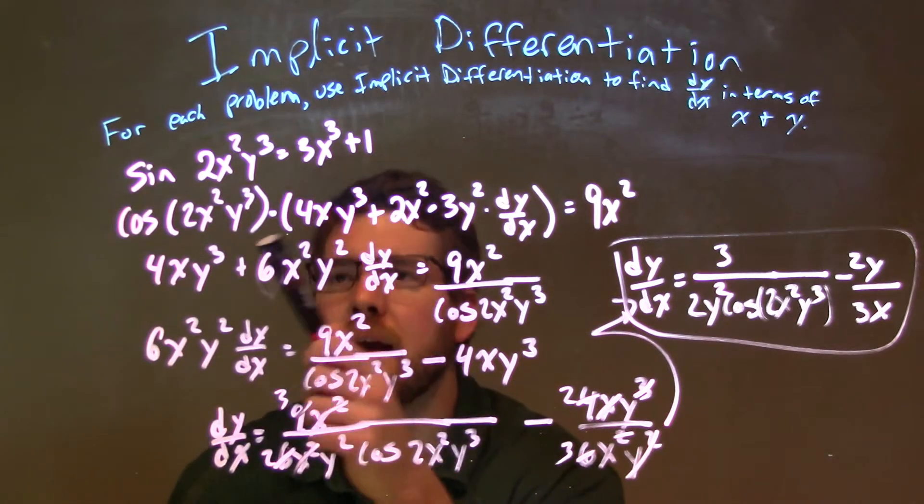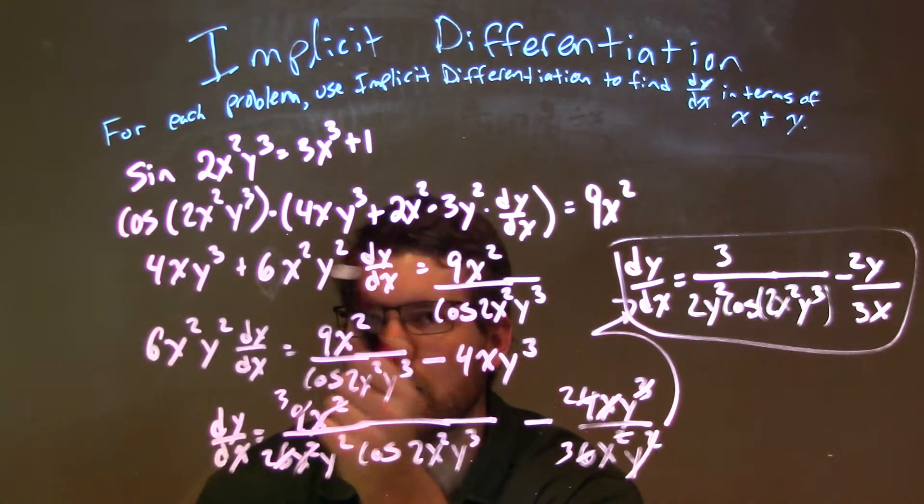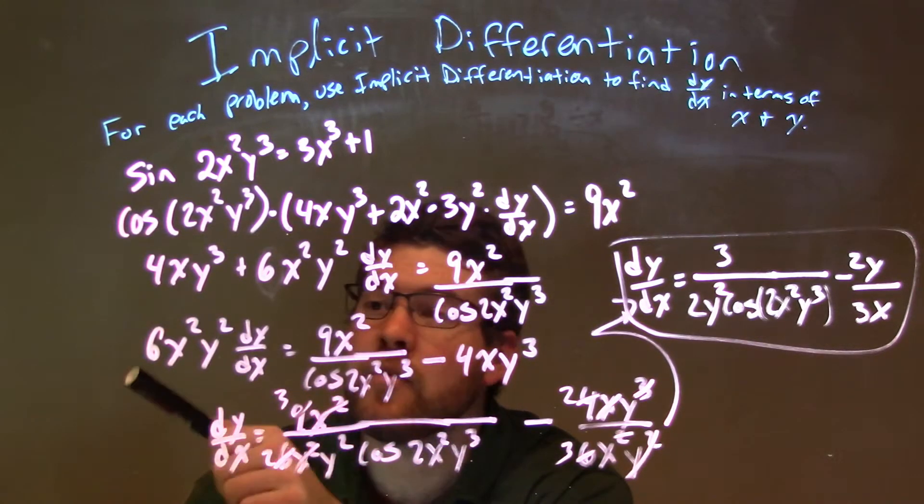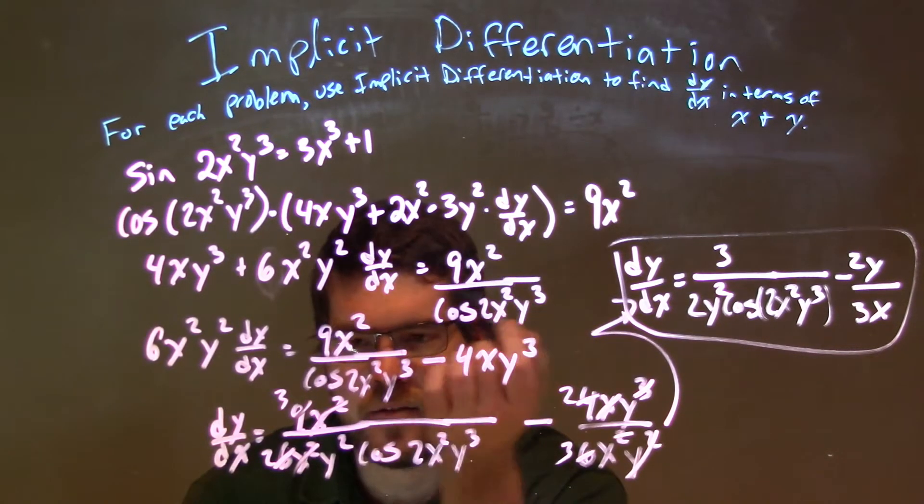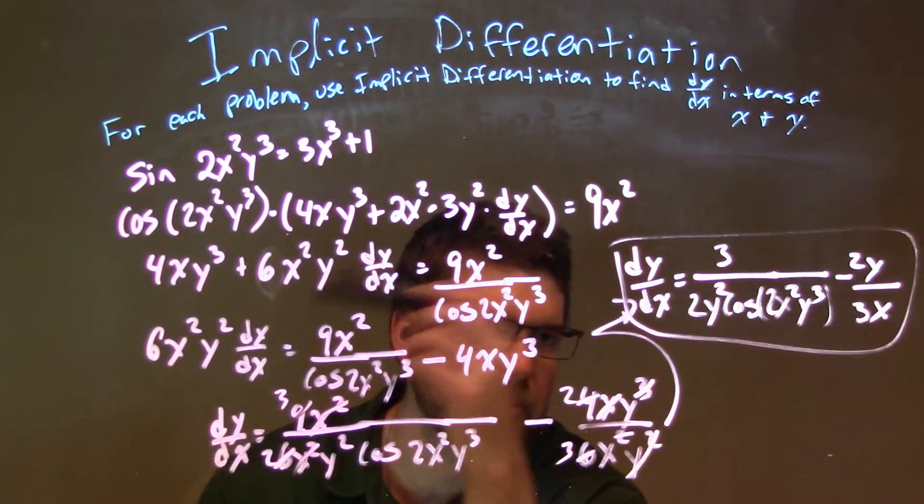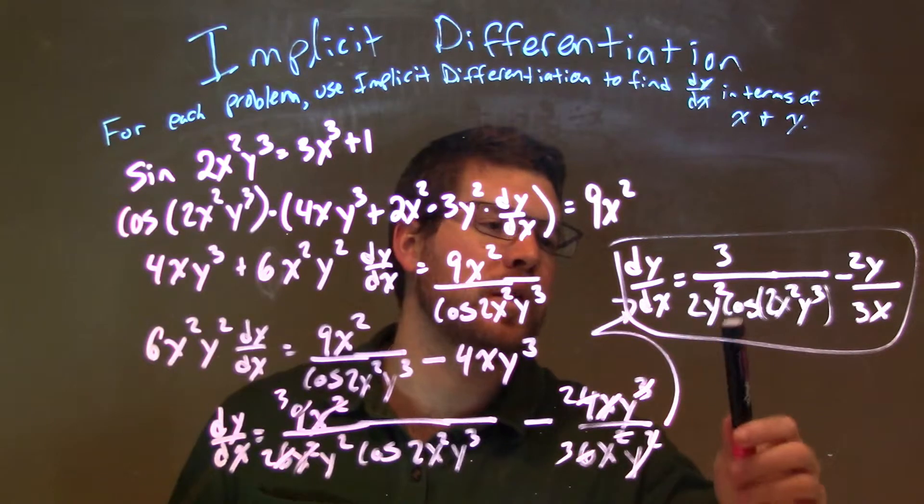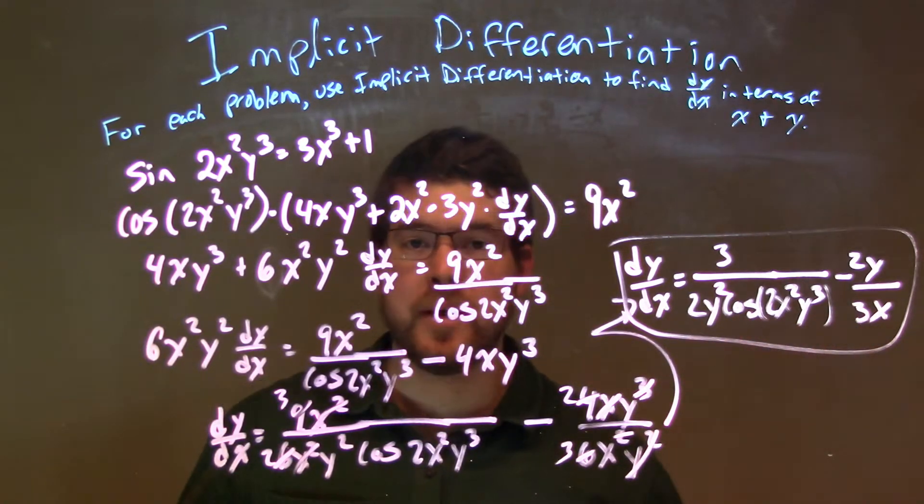Then from there, I divided both sides by cosine of 2x squared y cubed, some simplification, then subtracted 4xy cubed from both sides, then divided by 6x squared y squared on both sides, and I have dy/dx by itself. Did some algebra simplification, giving my final answer of dy/dx equals 3 over 2y squared cosine of 2x squared y cubed minus 2y over 3x.